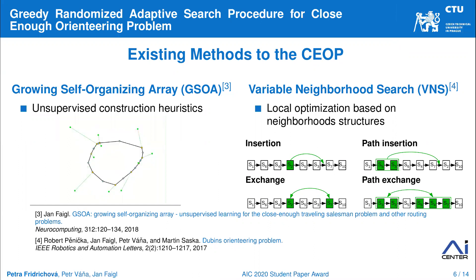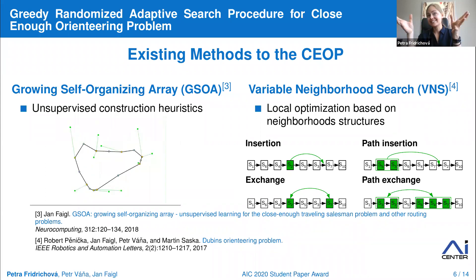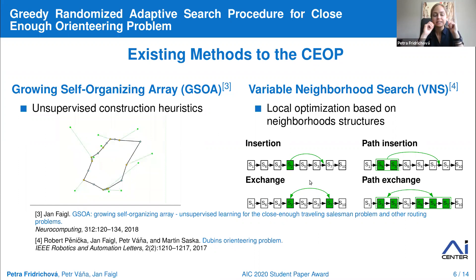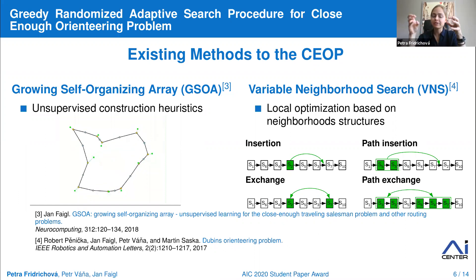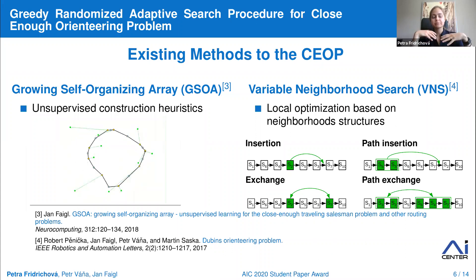In contrast, the variable neighborhood search, VNS, is an anytime algorithm that iteratively tries to improve the current solution using variable neighborhood structures. Each iteration consists of two phases: first, the shake procedure, which tries to escape local extrema by randomly using a single insertion or exchange operator; and second, the local search procedure, which tries to improve the current solution by path operators.